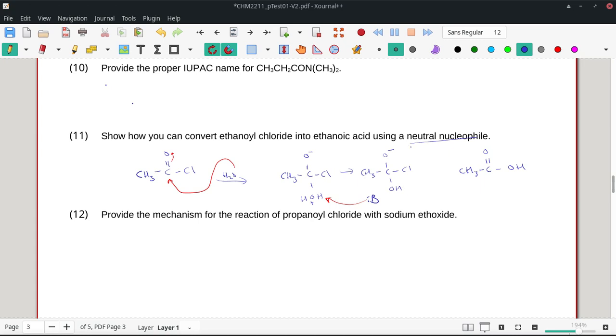Now, base could be anything with a lone pair, which is why they typically do just label base. And then we'll do this in one little step. Those lone pairs are gonna come down here, and we're gonna kick off the chlorine with the electrons.